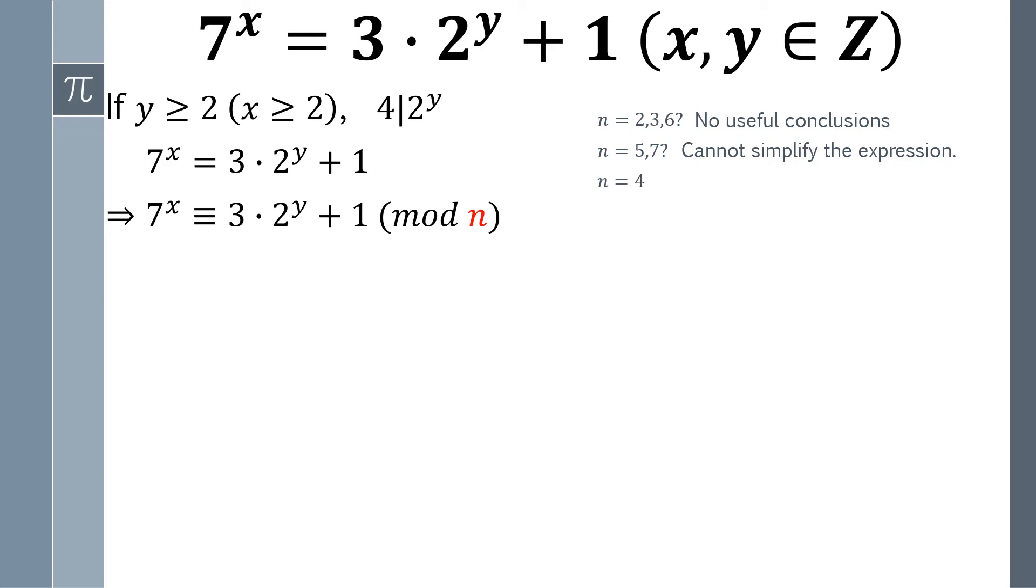Now, let's try to use 4 as a modulus. Since 7 and minus 1 are congruent modulo 4, and 2 to the y power is divisible by 4, then the congruence relationship can be turned in this format. And further, it can be turned as minus 1 to the power of x is congruent with 1 modulo 4.